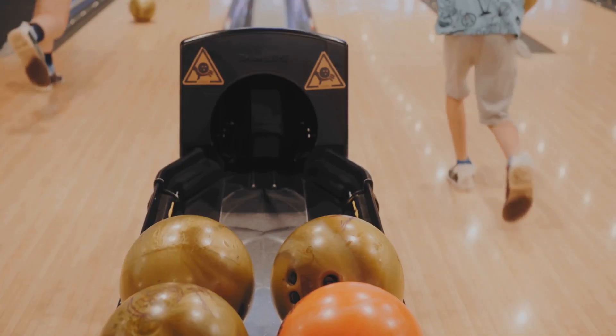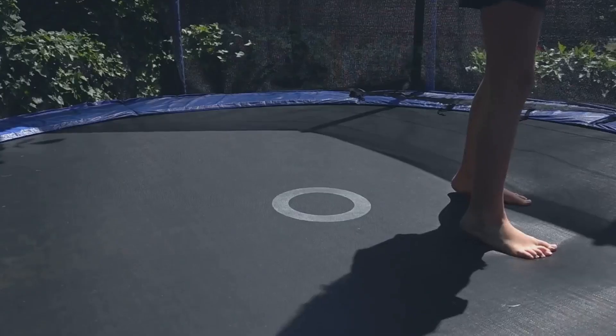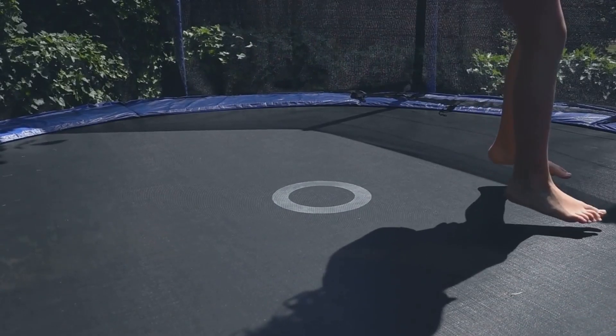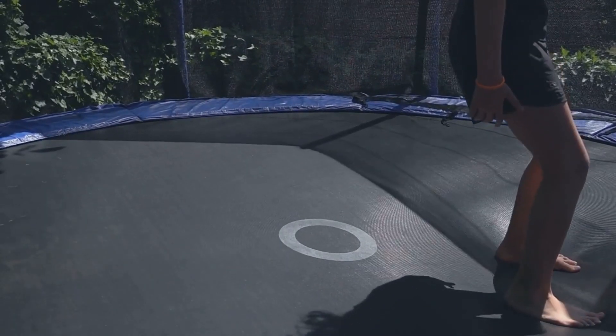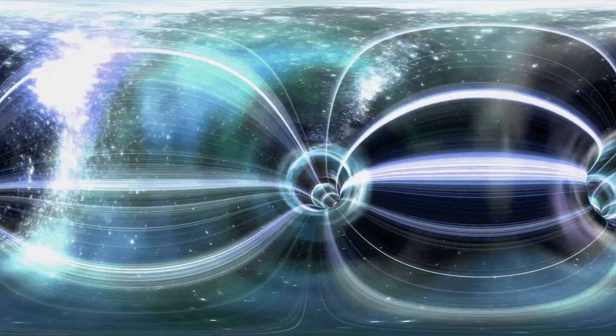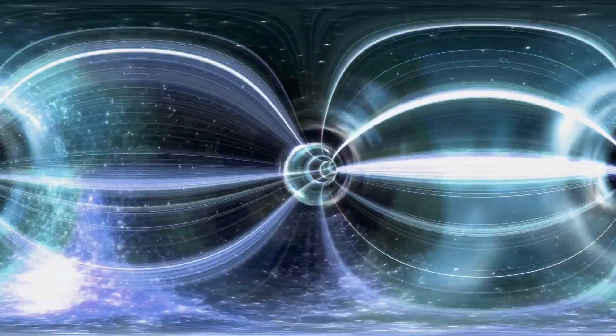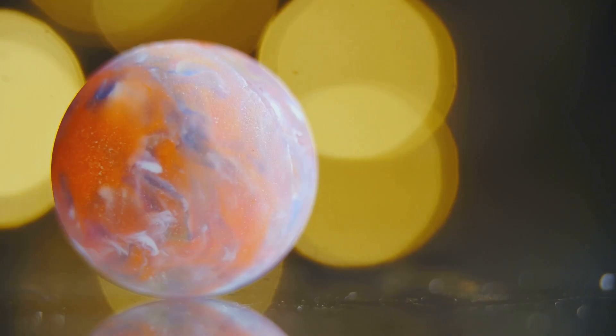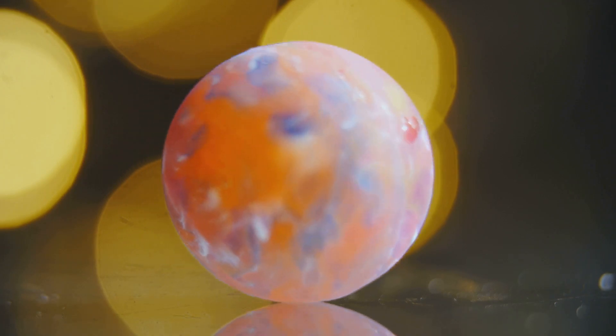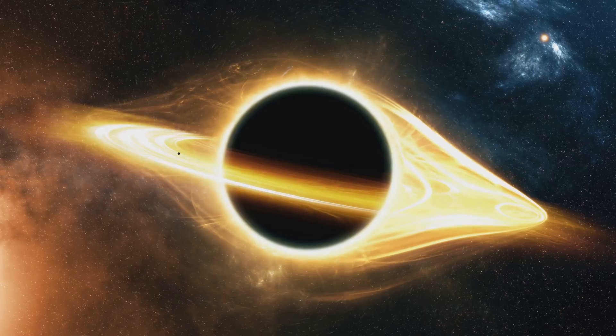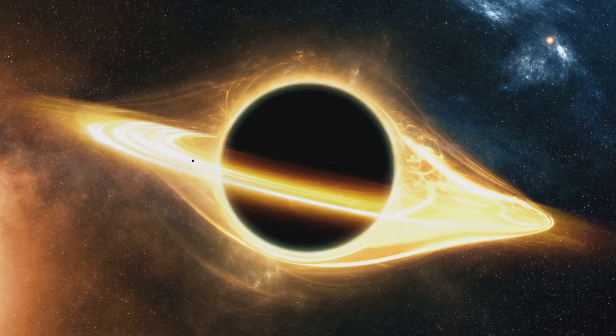Imagine a bowling ball placed on a trampoline. The ball's weight causes the trampoline's surface to sag, creating a dip. This dip represents the curvature of space-time caused by the bowling ball's mass. Now imagine rolling a marble across the trampoline. Instead of traveling in a straight line, the marble's path curves as it approaches the bowling ball, drawn towards the dip. This, Einstein proposed, is how gravity works.